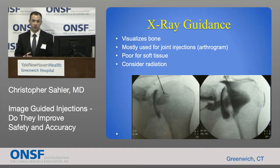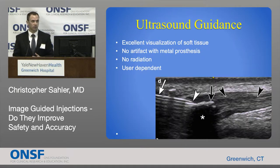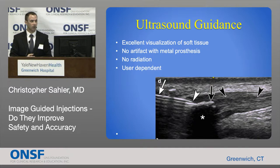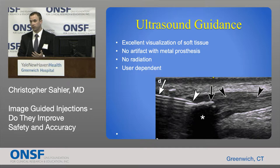If you have pediatric patients or pregnant patients, you really don't want to use x-ray if you don't have to. So we're using the fluoroscope or x-ray less and less, really because of the emergence of ultrasound for guidance. Over the past 10 years this has been expanding quite a bit. Ultrasound has excellent visualization of soft tissue, and you can also view bony anatomy, joints, blood vessels, nerves, and other structures as well.